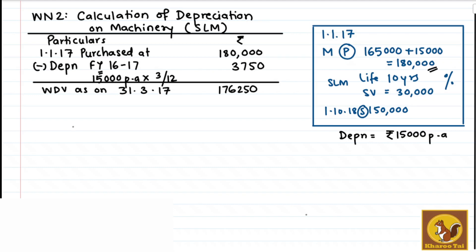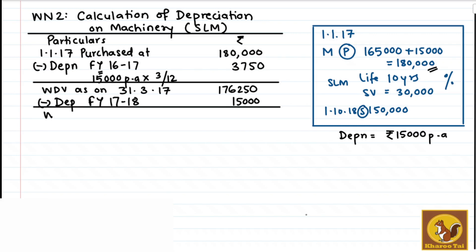In the second year, FY 17-18, there is no purchase or sale transaction, so we just calculate depreciation. Depreciation for FY 17-18 will be for the full year, so 15,000. The WDV at the end of the second year, as on 31st March 2018, will be 1,76,250 minus 15,000, which equals 1,61,250.